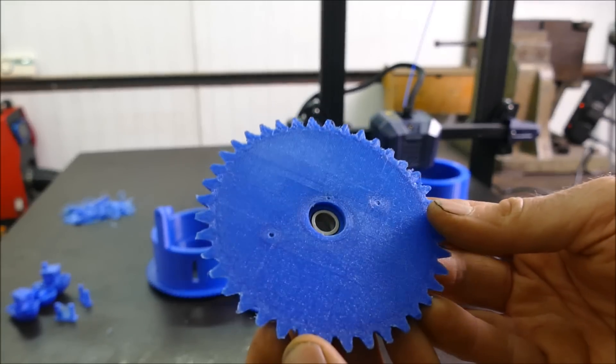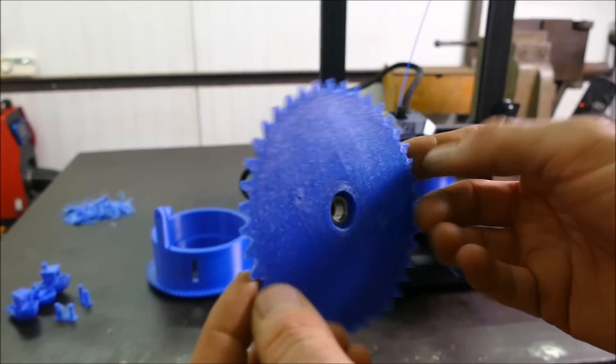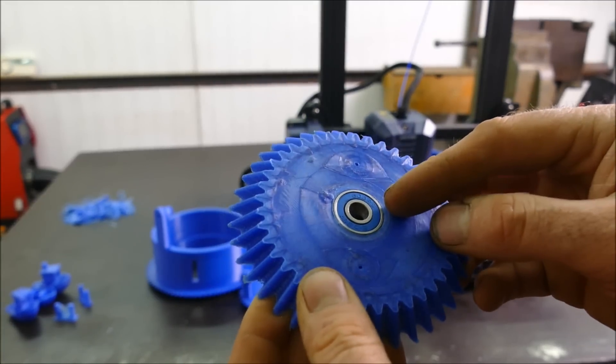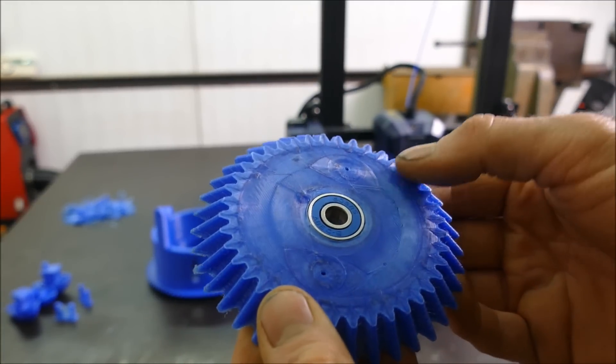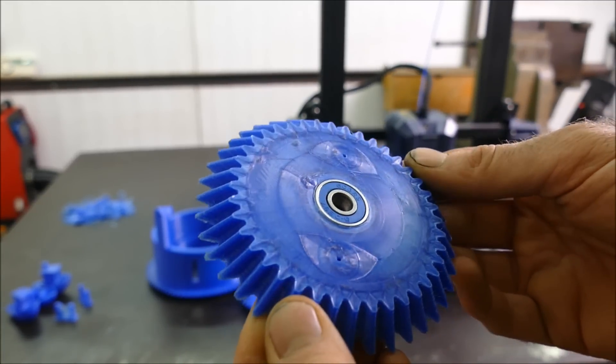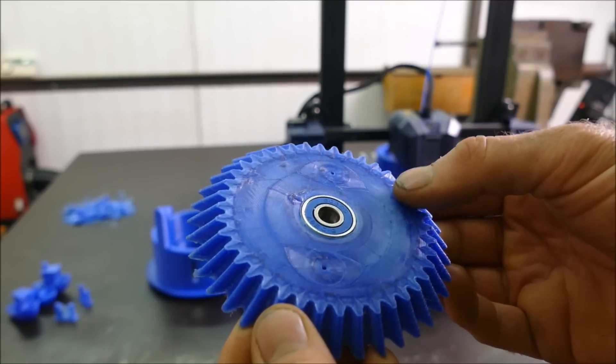Overall, this machine seems to be printing very accurately. You can see in the middle of this cog, I've pressed in a bearing. That bearing was a nice tight fit. It's just 0.05 millimeters bigger than the original model.